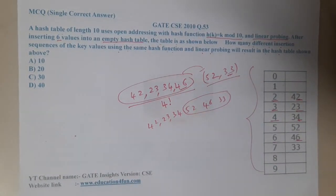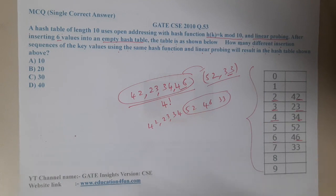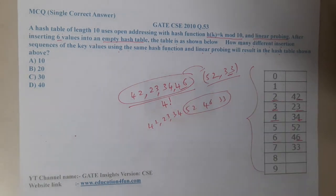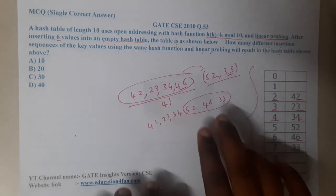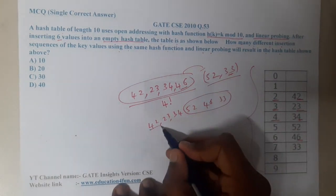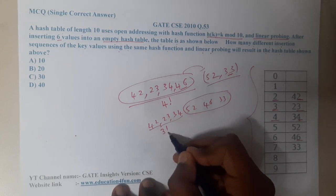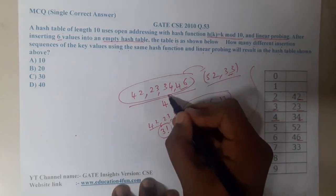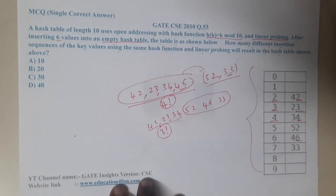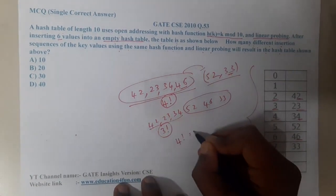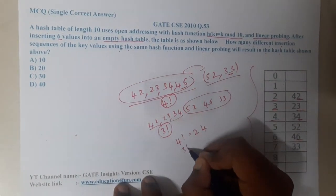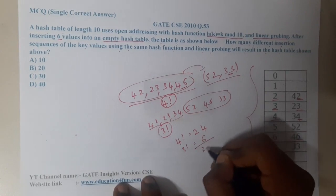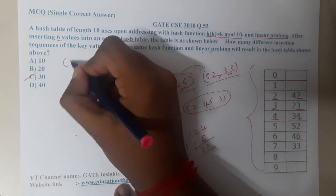These three elements — 52, 46, and 33 — can also have different combinations. You can swap these two elements, and they can be entered in three factorial ways. So the total is four factorial plus three factorial. Four factorial is 24, three factorial is 6, so the total is 30. Option C is the correct answer.